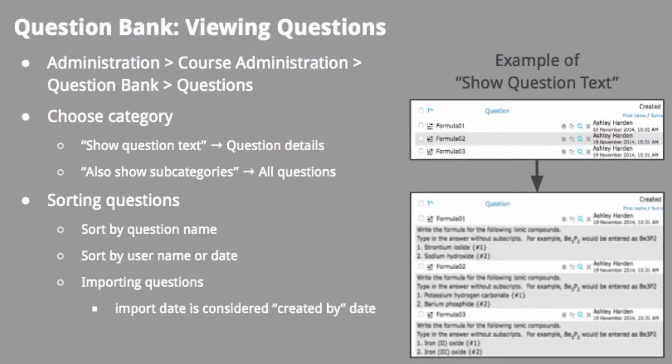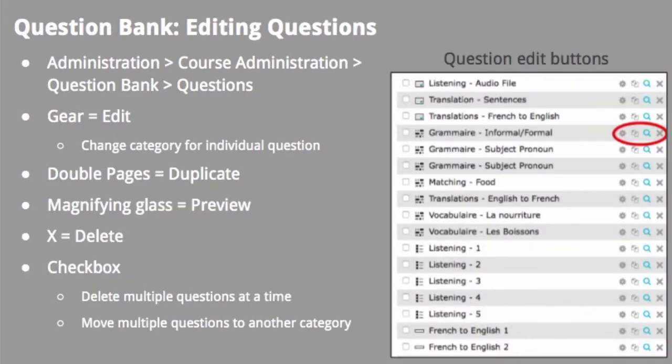When questions are imported into a course, the creator username and date reflects the import user and date, not the original creator and date of when the questions were originally written in the original course. Course facilitators have editing options when viewing questions in the question bank. Use the checkboxes at the left of each question to move or delete multiple questions at a time. Use the icons at the right to edit settings, duplicate, preview, or delete one question at a time.